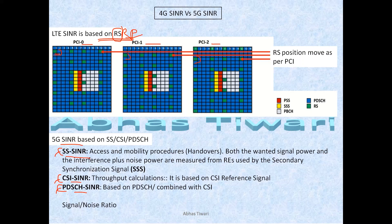You can see the value of reference signals — the green ones are your reference signals. The PSS and SSS are also shown, and the white or light blue ones are your PBCH. The green reference signals change their position based on PCI and are abundantly available throughout the subframe. So they are repeated frequently and their position changes based on PCI, resulting in less interference. It's all based on your RS position.